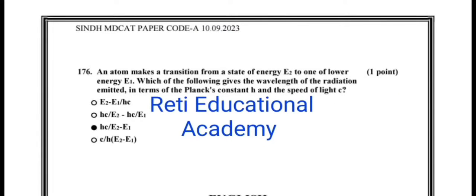Question number 176: an atom makes a transition from a state of energy E2 to one of lower energy E1; which of the following gives the wavelength of radiation emitted in terms of Planck's constant h and the speed of light c? The correct option is C. Please subscribe to the Educational Academy YouTube channel and follow us on TikTok and Facebook. I will upload the remaining part soon — stay connected, thank you.